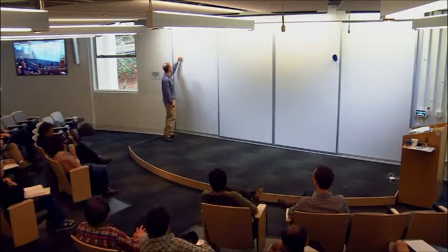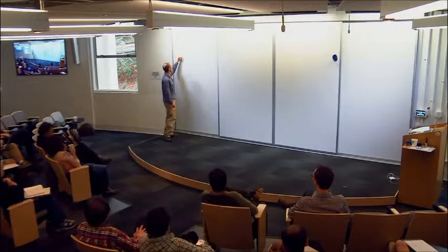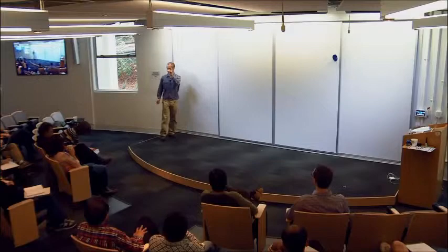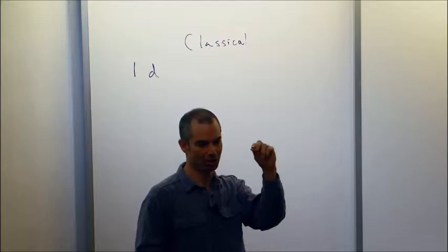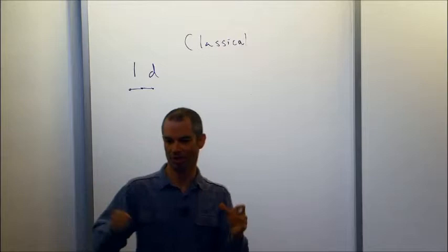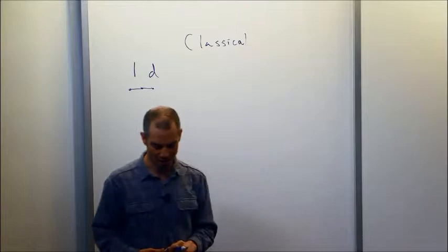I want to start by talking about some classical problems and explain what the PCP theorem is. Let me give a list of examples. Suppose we have a one-dimensional system — let's just start by writing some classical systems. Suppose we have a one-dimensional system with spins on a line, some classical coupling where each one couples to its neighbor. At each site there may be not just two states but three, four — some fixed order one-dimensional thing. Let's ask what happens in this case classically.